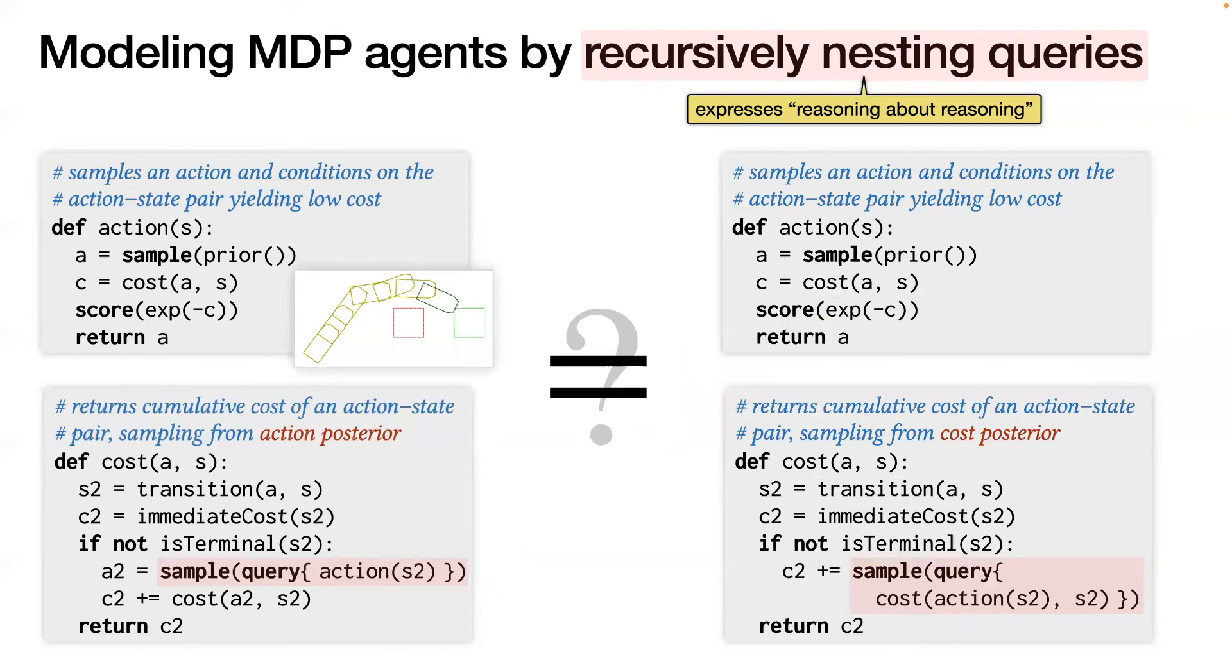From this MDP encoding arises an interesting program equivalence question. What if nested queries enclose not only the recursive call to action, but also the recursive call to cost? Will this change affect how the MDP agent functions? That is, are the two versions of the MDP encodings semantically equivalent?